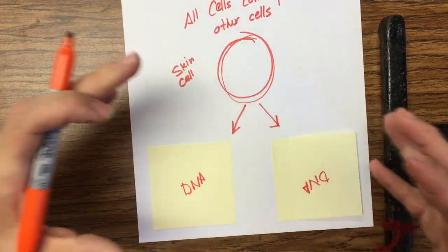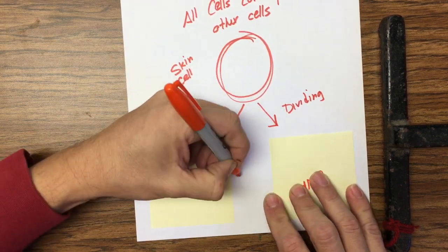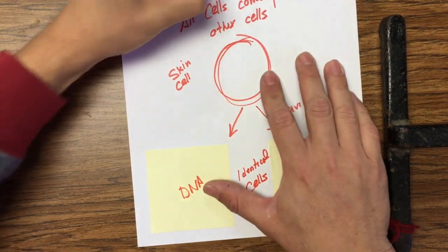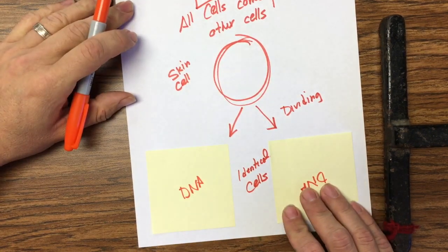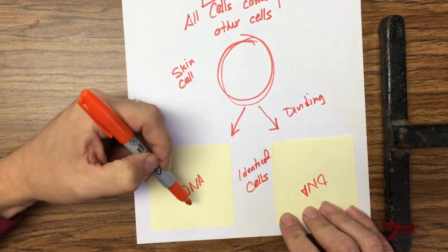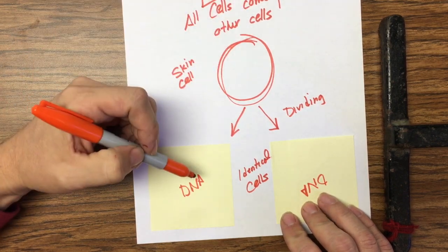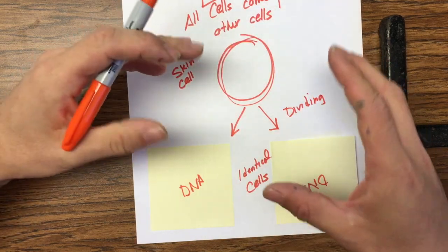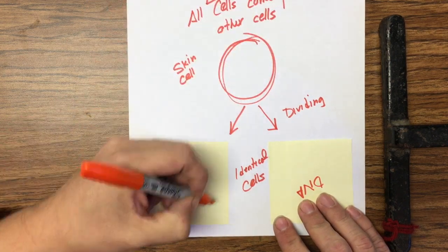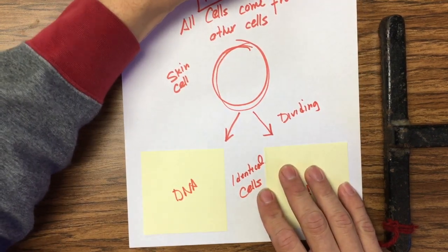Now you have two different cells. You started with one and now you have two. This process of one cell growing and dividing to create two identical cells is called mitosis. Think of mitosis as forming two identical cells — that's how our bodies make new cells.